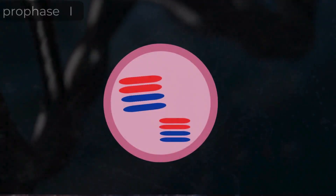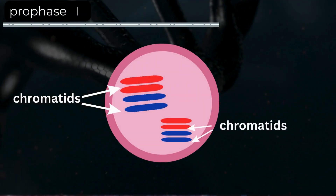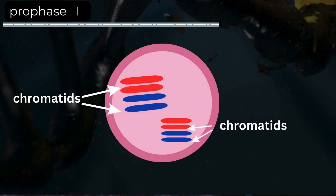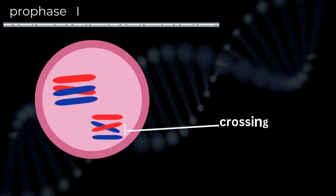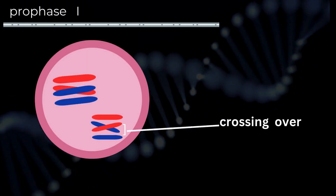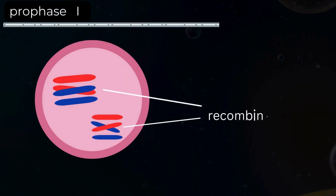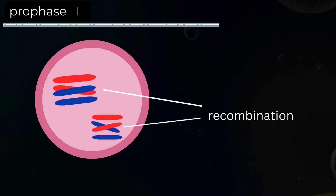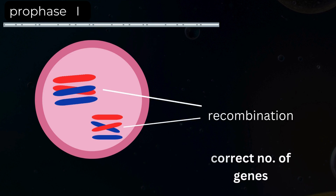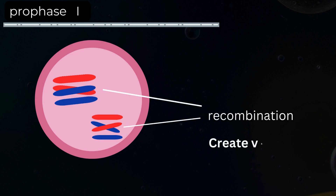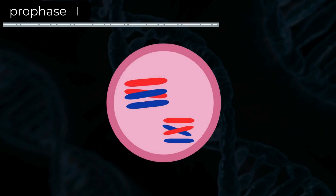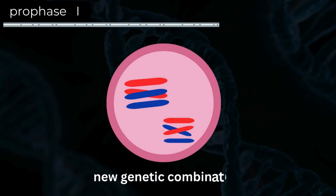As each chromosome is lined up next to its partner pair, one chromatid from each side gets entangled with the corresponding chromatid from the other side — this is called crossing over. During this brief period, the two chromatids swap certain sections of DNA. This is called recombination. The sections that they trade correspond to the same location, so that each chromatid retains the correct number of genes. Recombination is really important because it creates variety; the new cells are not identical to their parents and they are also different from one another.